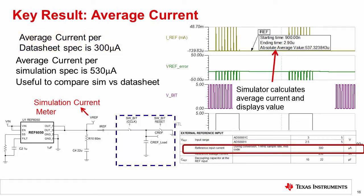In this example, a conservative approach was used where the reference input sees the worst case MSB load capacitance 8 times per conversion. The simulation model consumes 530 microamps at full throughput of 1 mega sample per second, which is in the same order of magnitude as the datasheet spec of 300 microamps. By adjusting the duration of the control signal, the user can increase or reduce the number of times the reference input sees the MSB switch capacitive load and adjust the current consumption. In most cases, allowing the control signal high for 4 to 8 conversion clocks produces a good approximation of the reference input load.